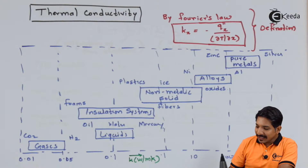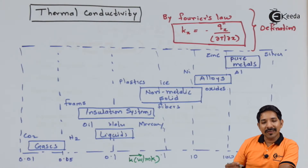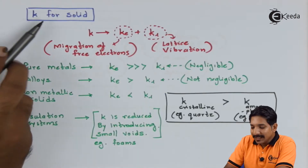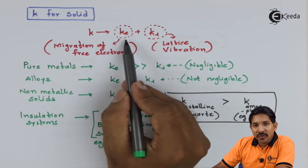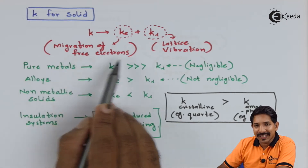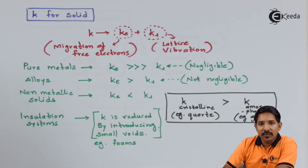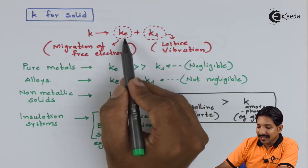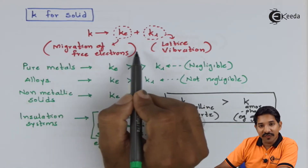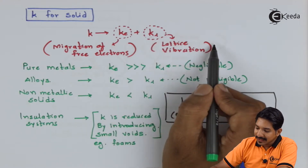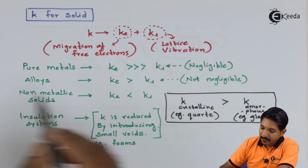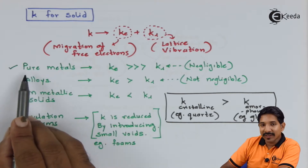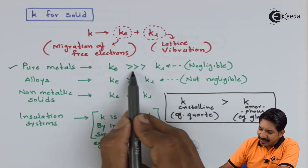To understand why thermal conductivity varies so much from solids to fluids, we need to examine the basic mechanism. In solids, thermal conductivity depends on two parameters: migration of free electrons and lattice vibration. The total K equals KE plus KL, where KE is thermal conductivity due to free electron migration and KL is due to lattice vibration. For pure metals, KE is very high compared to KL, which is why their thermal conductivity is highest.